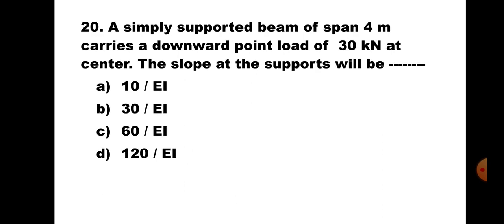Question number 20. A simply supported beam of span 4m carries a downward point load of 30kN at the centre. The slope at the supports will be: A. 10/EI, B. 30/EI, C. 60/EI, D. 120/EI. This is the standard case of a simply supported beam carrying a point load at the centre. Slope at the support is WL²/16EI. Putting all the values, you will get the answer as 30/EI. Hence, the correct answer is B. 30/EI.